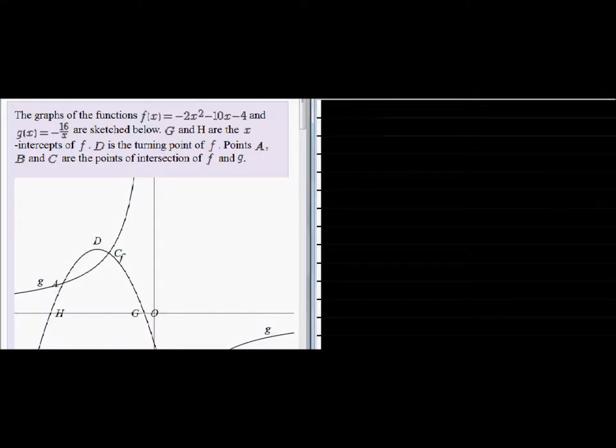Here we're given that the graph of the functions f(x) is equal to negative 2x squared minus 10x minus 4 and g(x) is negative 16 over x. They are sketched below.